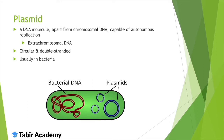To recap, bacteria's DNA is of two types: one is chromosomal DNA and the other is plasmid, which is circular DNA. Plasmid is also double-stranded and capable of replication.